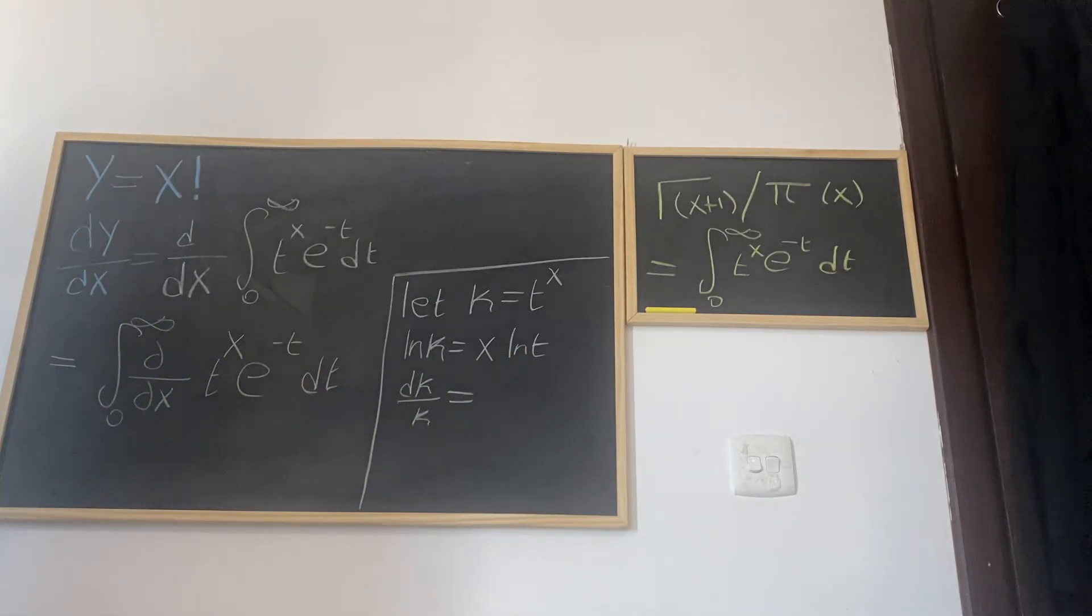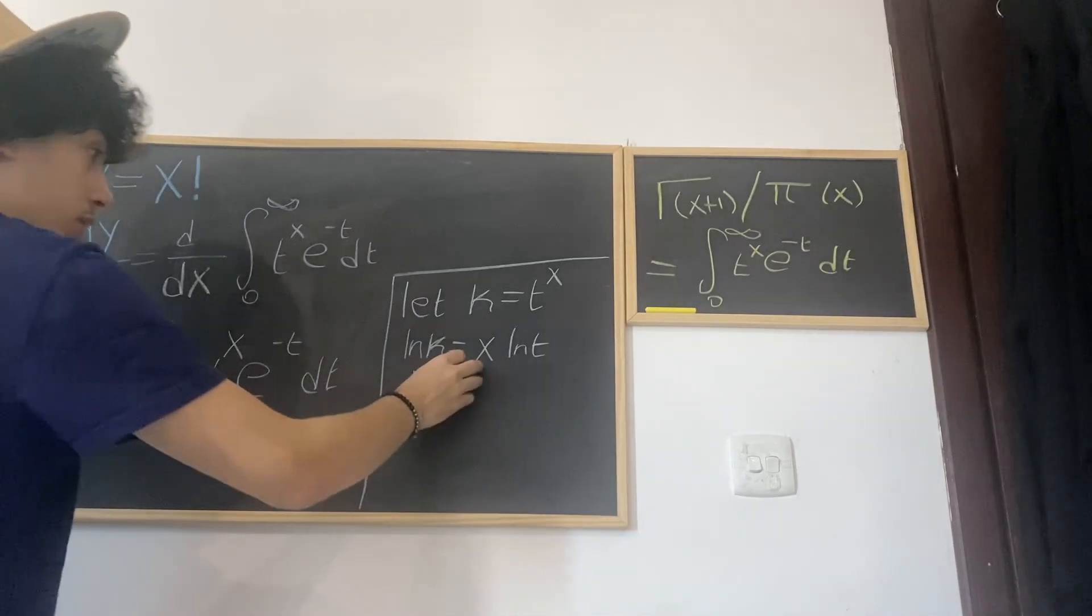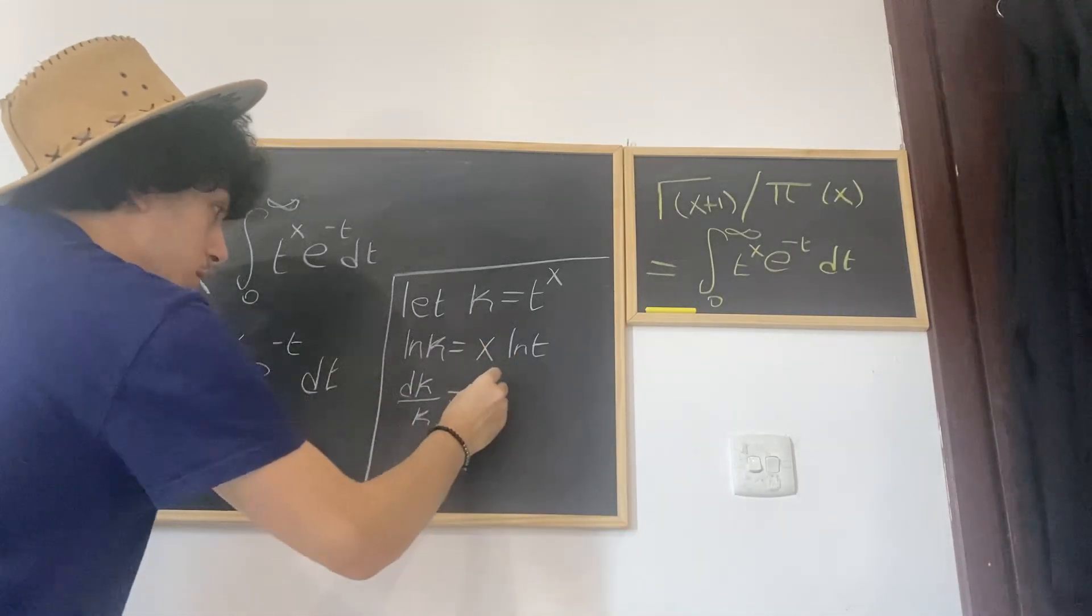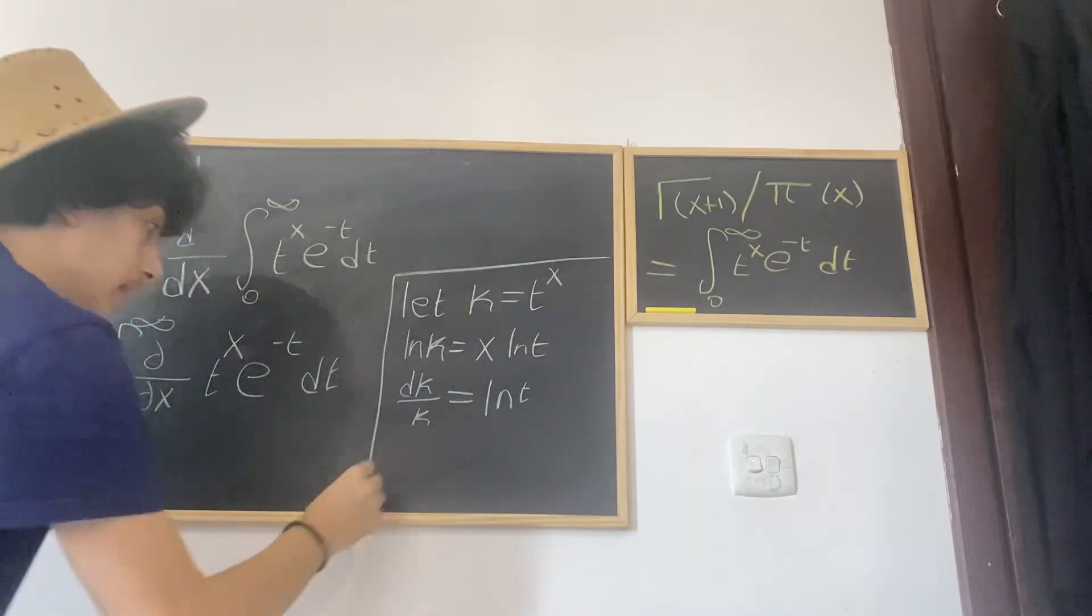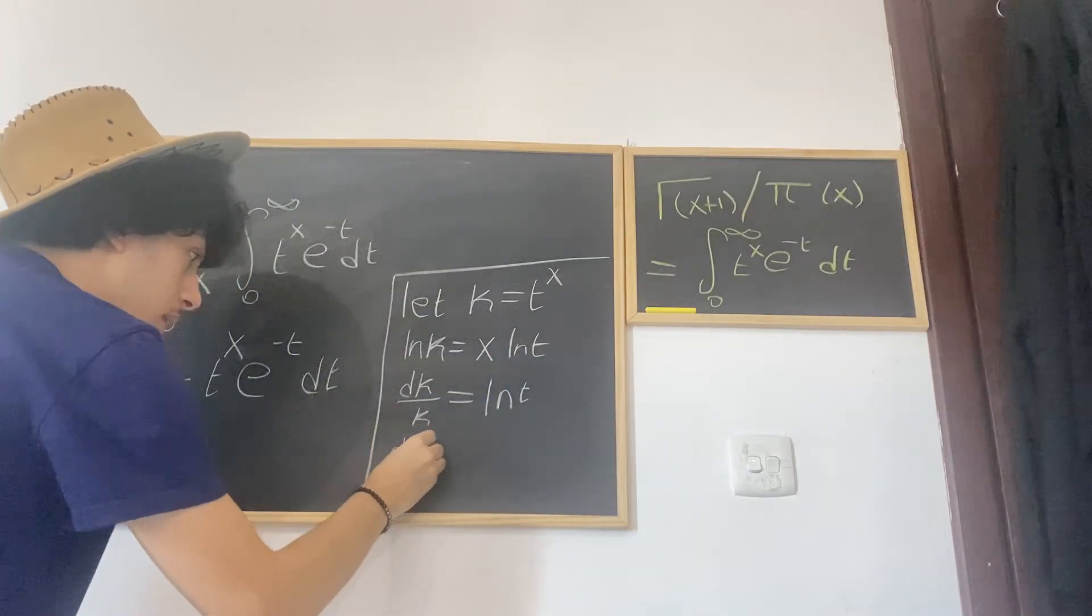So differential of x multiplied by ln(t) will be just ln(t). And this means that dk is equal to k multiplied by ln(t).